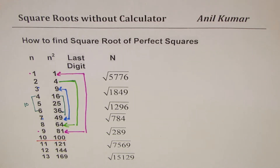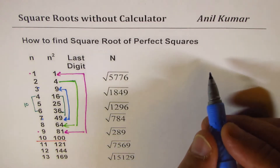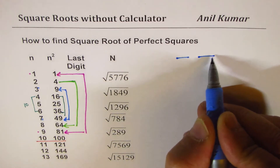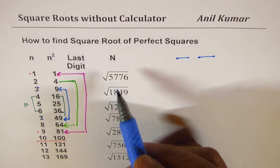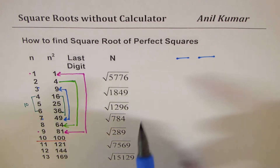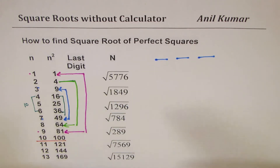Whenever we find the square root of these numbers, we always work in two digits — that is the idea for this video. It can be extended to three or four digits, but we limit ourselves to just two-digit numbers here.